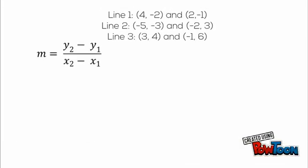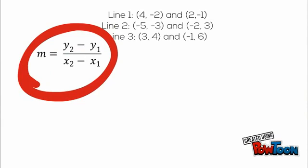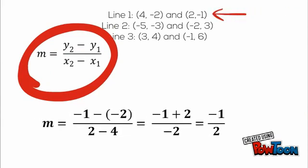Now let's substitute the points into the slope formula. So for line 1, we would do m equals negative 1 minus negative 2 over 2 minus 4. And when you simplify that, you get negative 1 half.